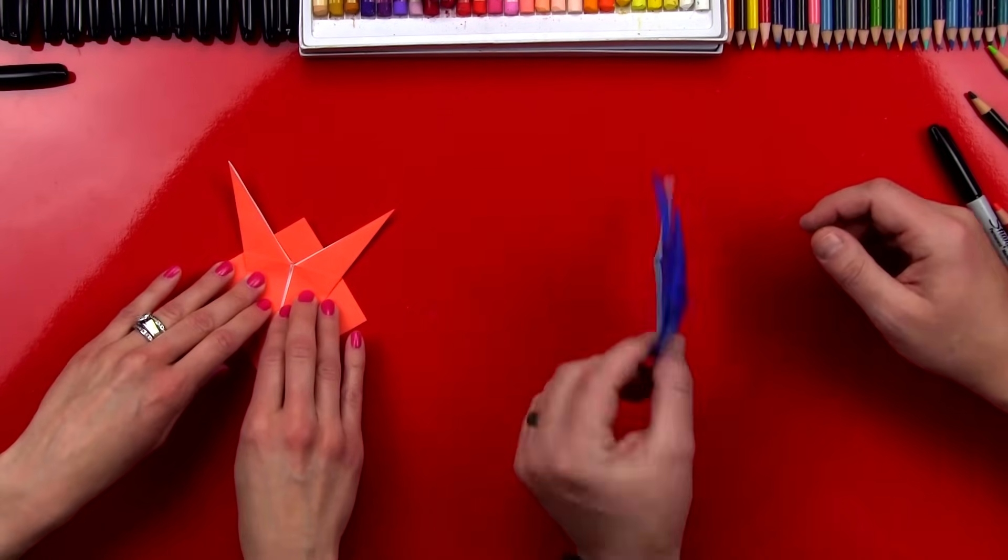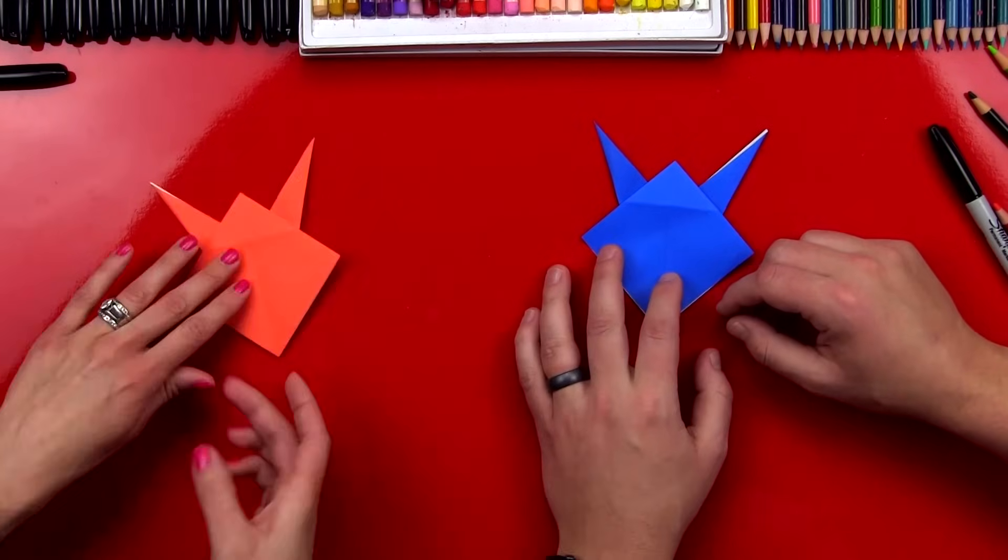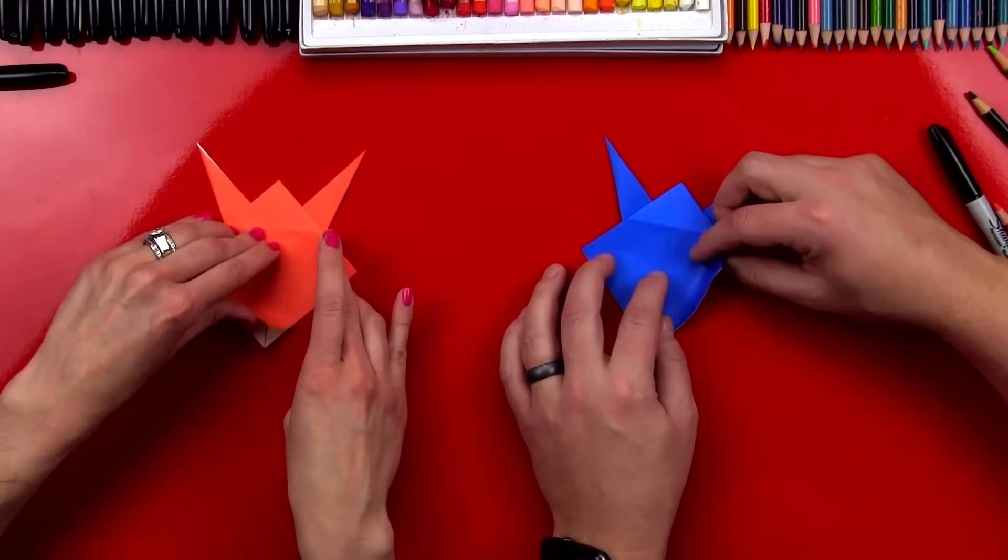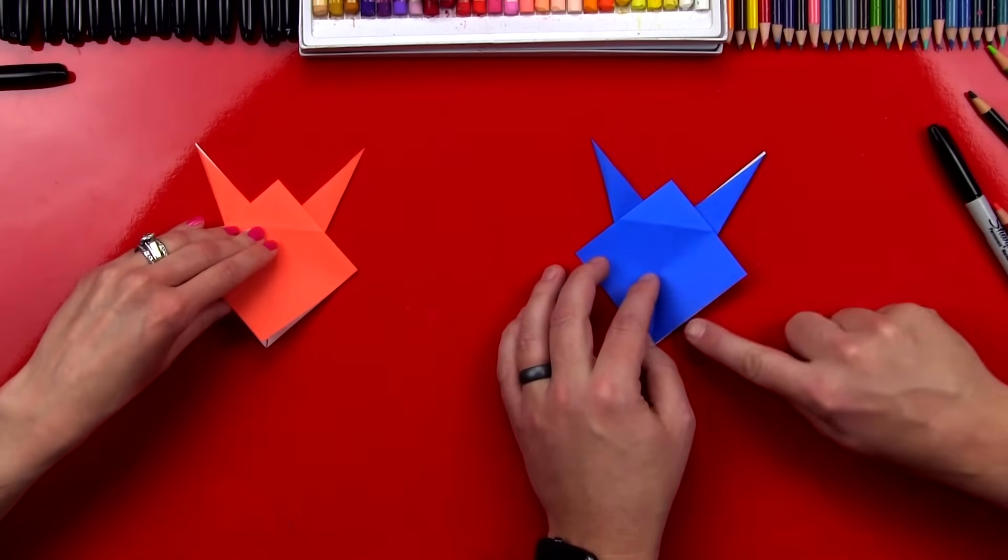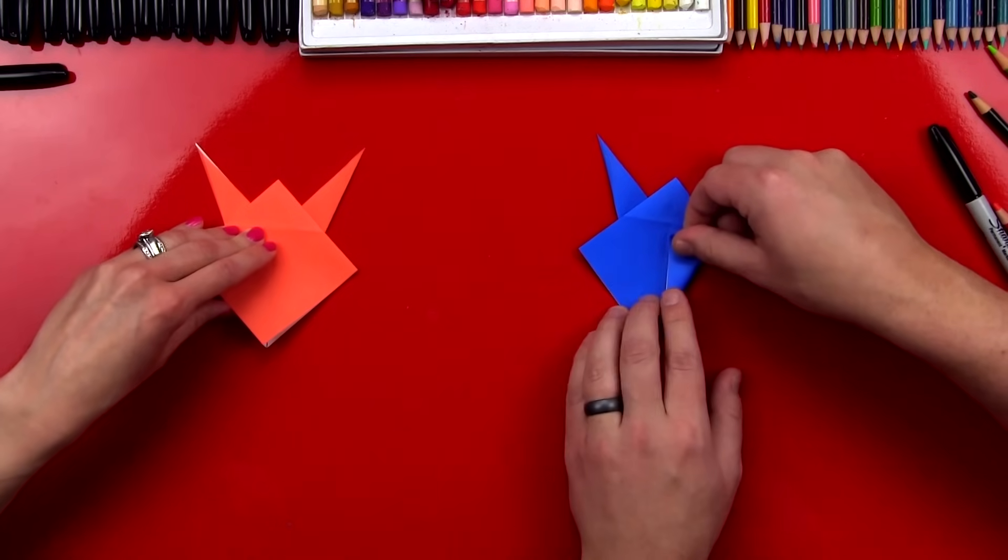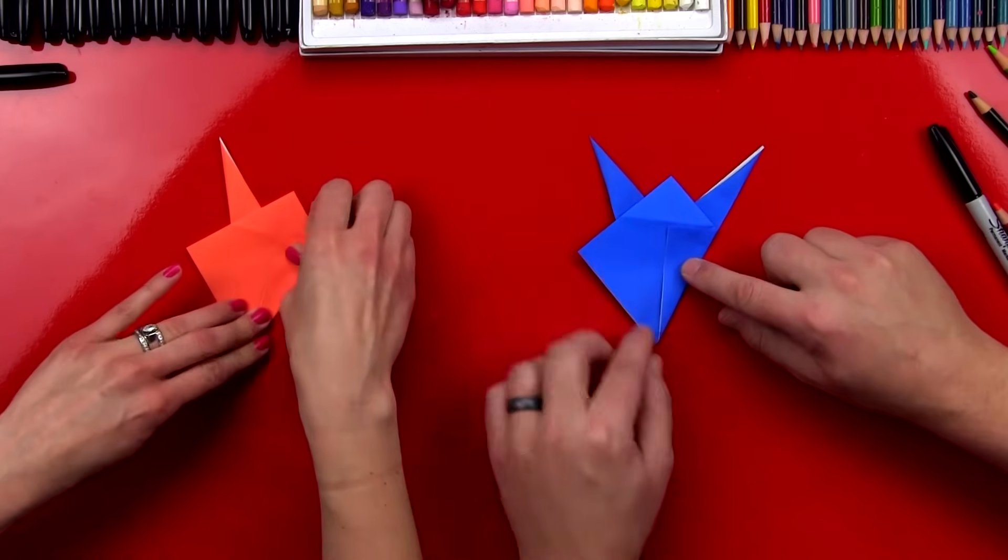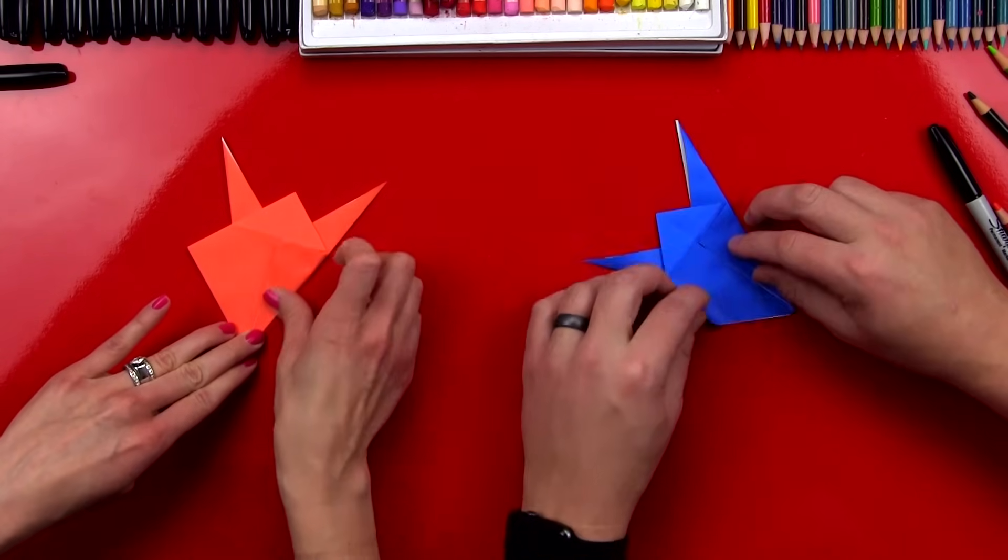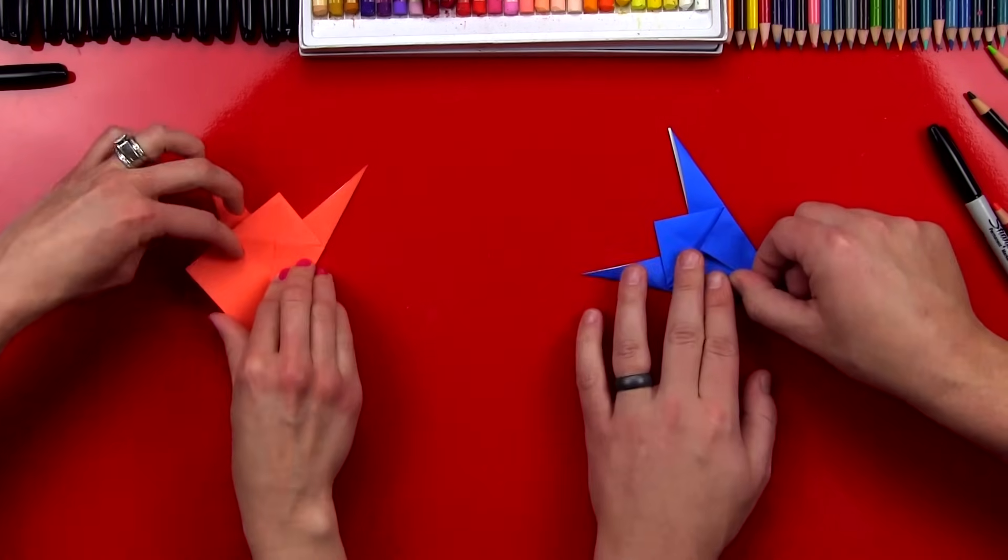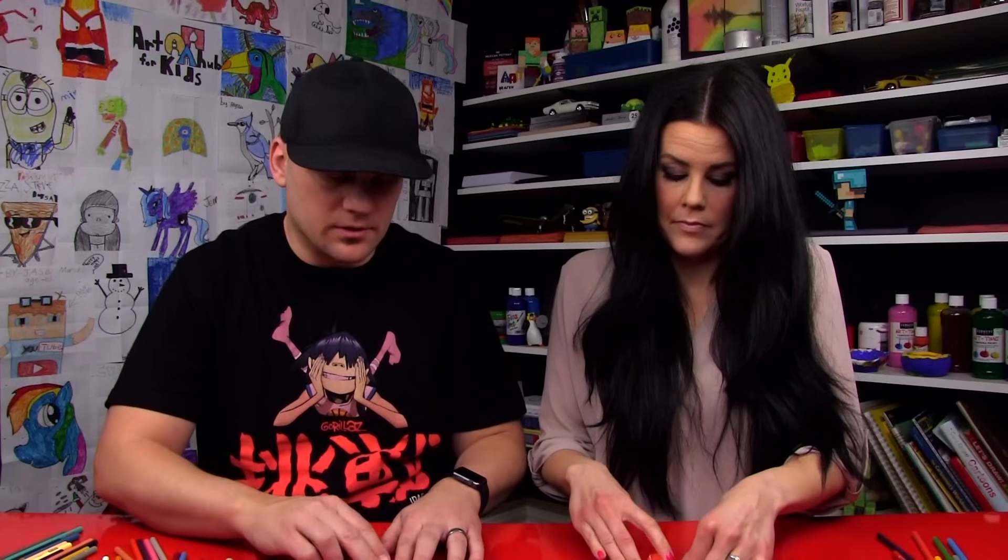Okay, now we're gonna flip it over and we're gonna repeat all those same steps. You think you can do it from memory? Maybe. We're gonna first fold this edge to the middle. Like that. And then we'll fold this edge to the middle also. It's kind of like you're making a paper airplane. You're really good at those.